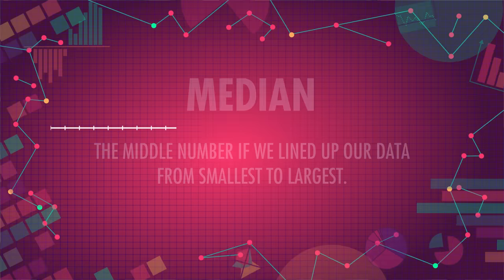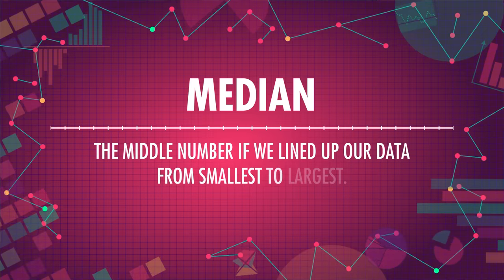Unlike the mean, the median doesn't use the value of every data point in its calculation. The median is the middle number if we lined up our data from smallest to largest. For example, if you have two cats, Jillian has one cat and Eric has three cats, the median number of cats in your group would be two — two is in the middle. But what if there's no middle number? If Will joins your cat group with an impressive — or is it excessive — total of 14 cats, there are now four cat owners and no single middle number. Both two and three are in the middle. In this case, we take the mean of the two middle numbers, so our median would be two and a half cats.